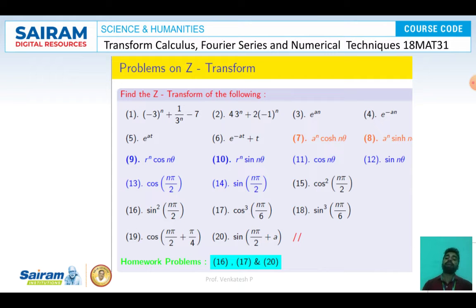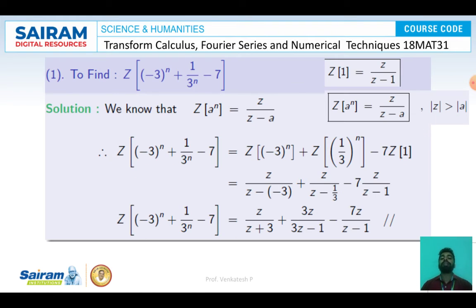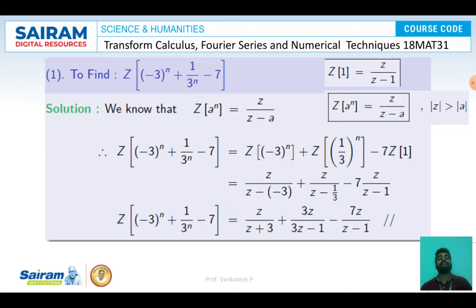For all these functions, I am going to find the Z-transform using basic Z-transform formulas. The first problem is to find the Z-transform of -3^(N+1) / (3^N - 7). We will apply Z-transform on both sides, making use of the formula Z{1} = Z/(Z-1) and Z{A^N} = Z/(Z-A), with the condition |Z| > |A|.